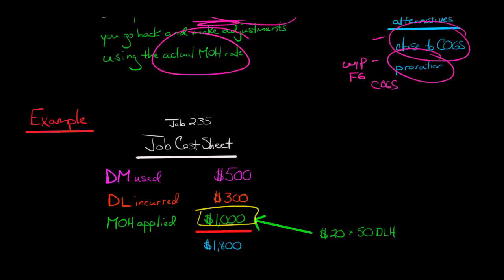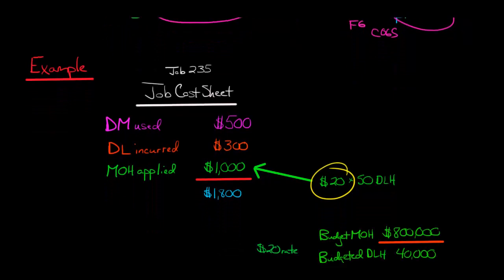How did we apply this $1,000 of manufacturing overhead? We calculate a predetermined overhead rate. For this company, let's say the predetermined overhead rate was $20.